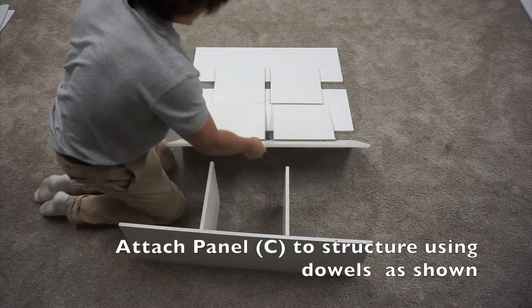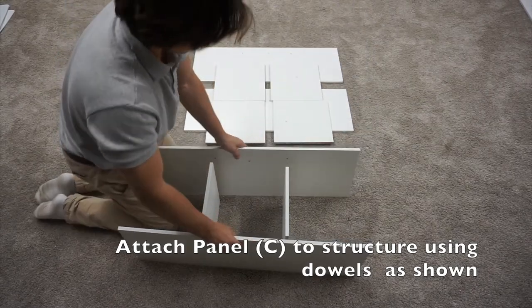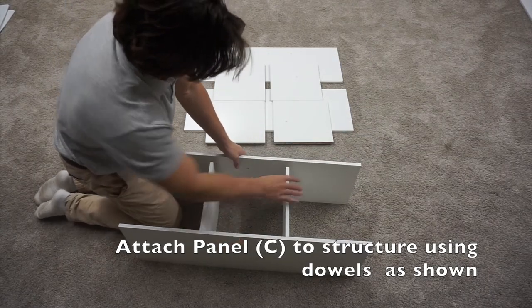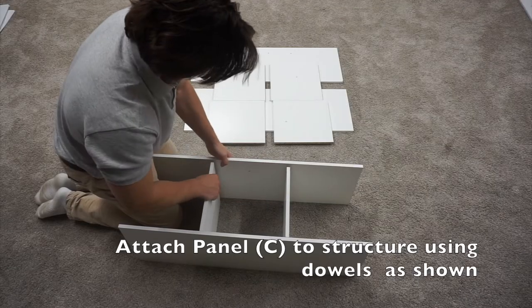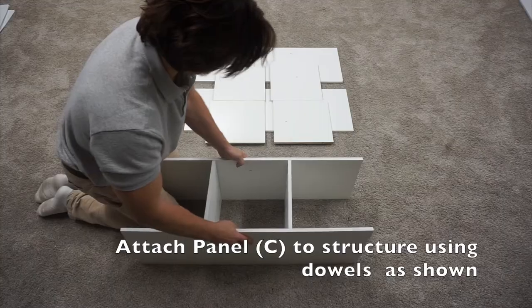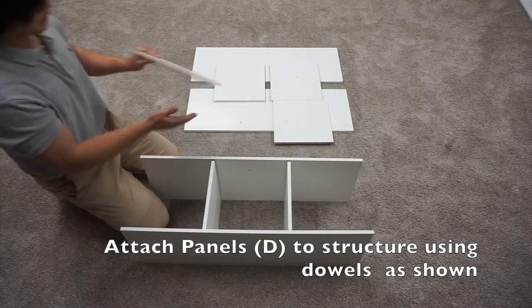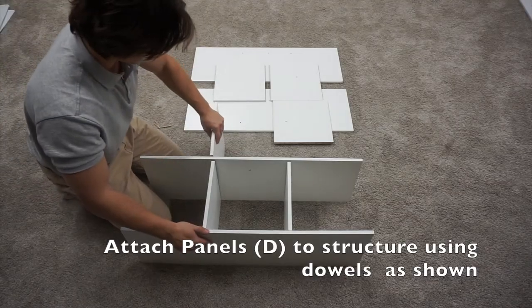Next, take a C panel and insert them through. Then, take your two D panels and add them on.